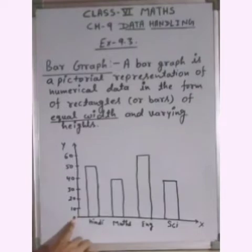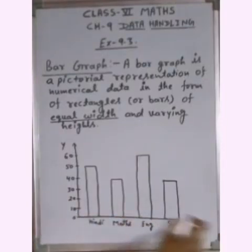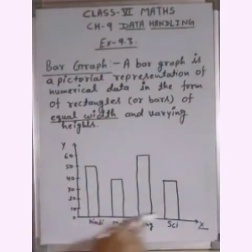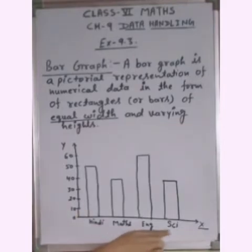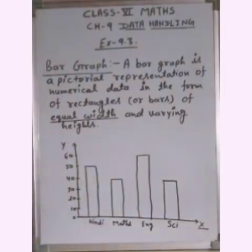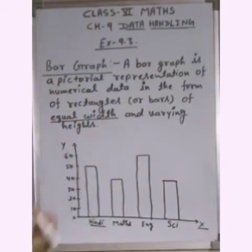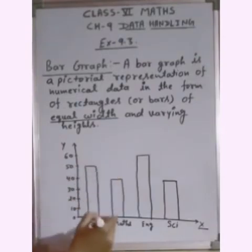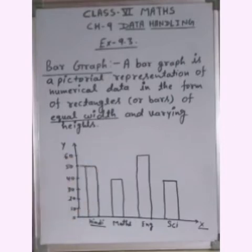In the bar graph, this is our x-axis — the horizontal line — and this is the y-axis — the vertical line. Here we have been given marks of a student in Hindi, Maths, English, and Science. We need to read this bar graph and find out how many marks the student has in each subject. In Hindi, we join the bar and see that the marks are 50.